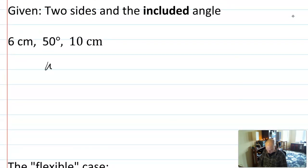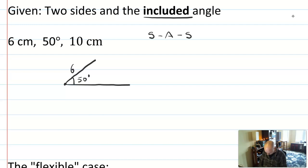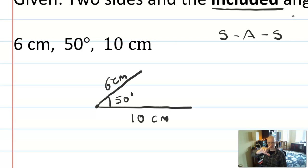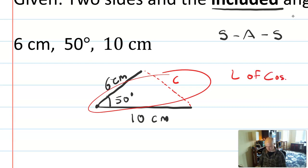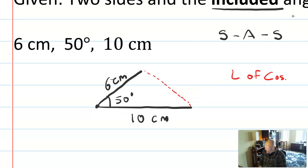Another case is two sides and the included angle — 'included' meaning specifically in between. This corresponds to the side-angle-side congruence theorem. These three items create a completely unique triangle: you can imagine holding two sides out at the given angle and connecting the last side — there's only one way to do it. I'd use the law of cosines here, since I have two sides and an angle and I'm missing the opposite side.